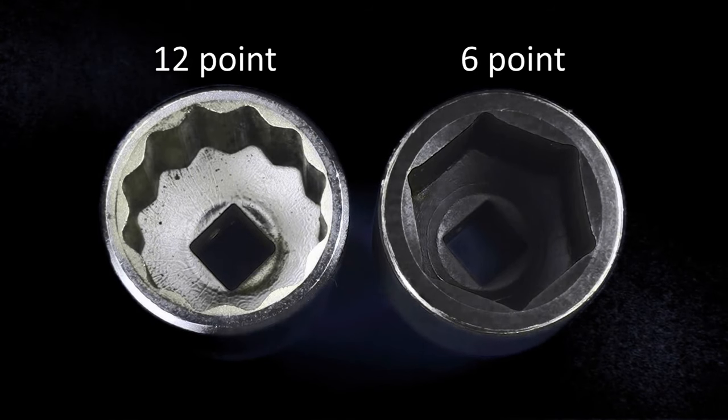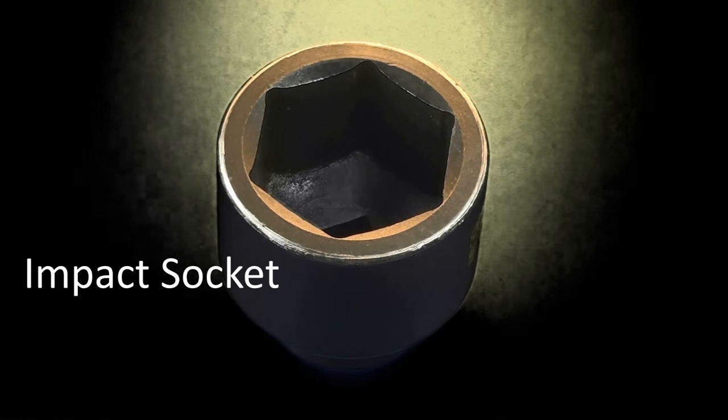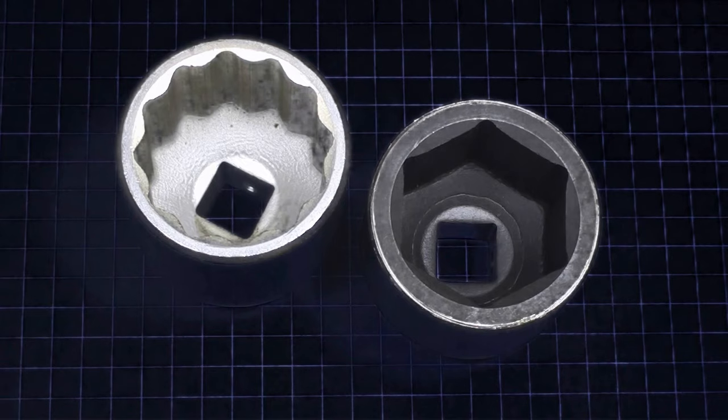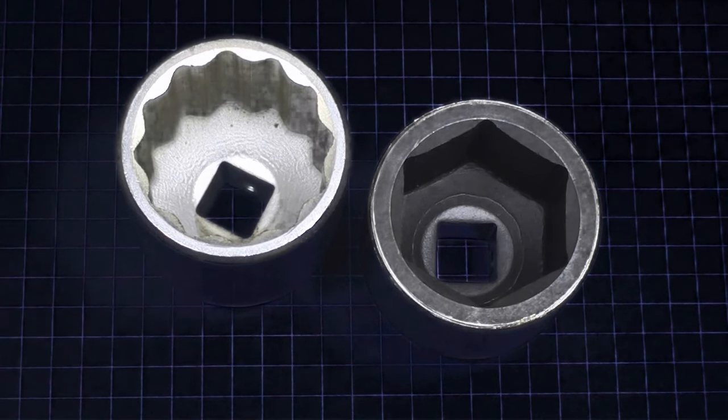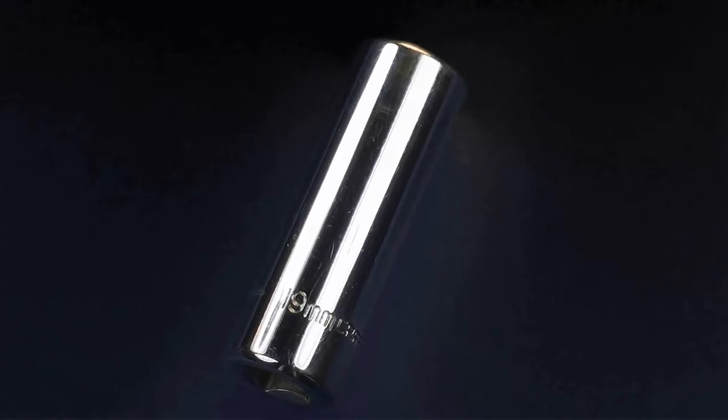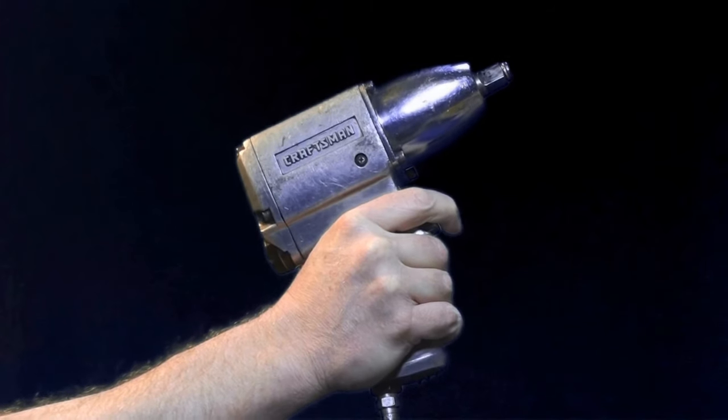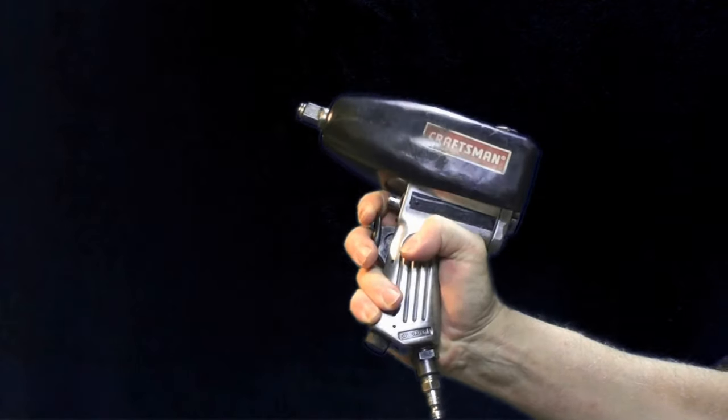Sockets come in 6-point and 12-point, which are hexagonal and double hexagonal. Black sockets are heat-treated impact sockets with very thick walls, compared to the silver version which has a finished metal surface like chrome or polished metal. Silver sockets are thinner and lighter for use with hand tools, as opposed to impact sockets which are used with impact guns and impact wrenches.